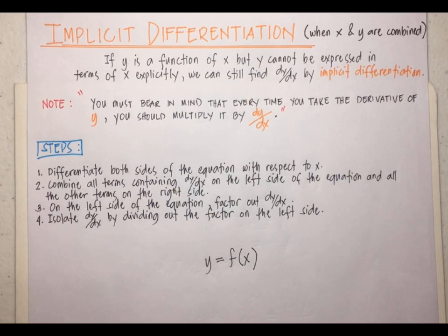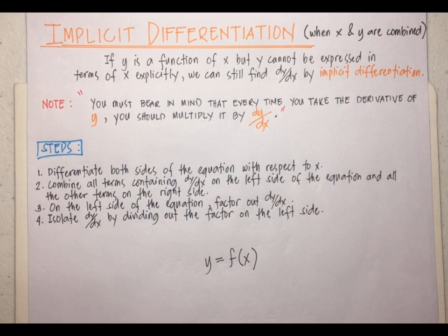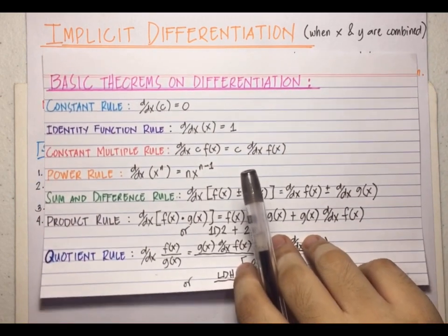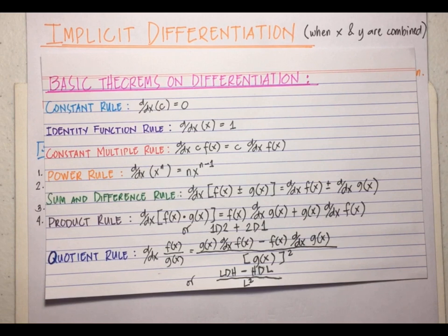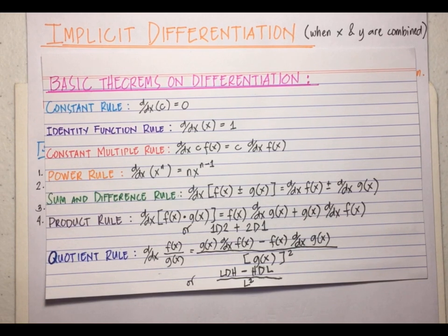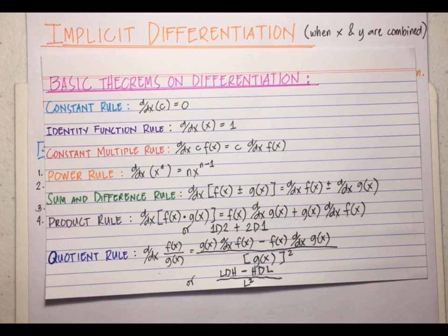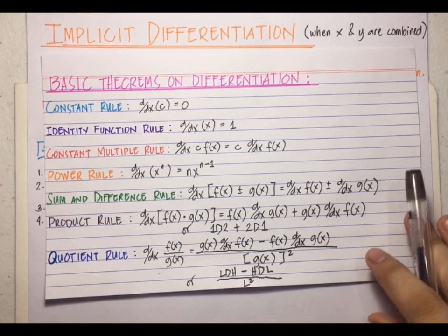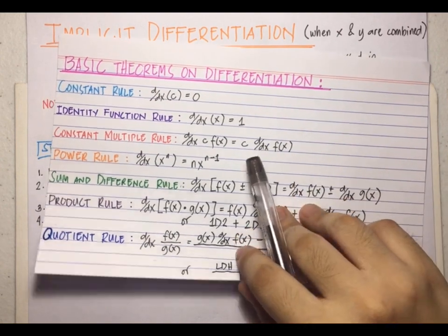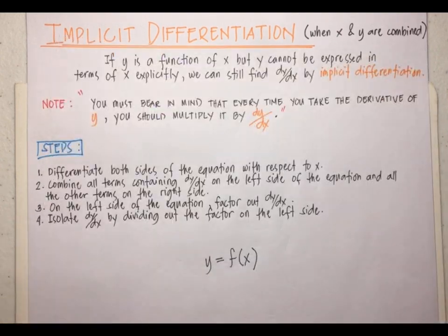For this topic, we're going to use all of the techniques that we have learned from our previous lessons — our power rule, our product rule, identity function rule, and all the other rules or theorems. The same basic differentiation formulas are applied in finding the derivative of an equation in implicit form.